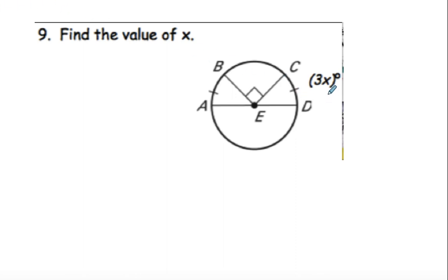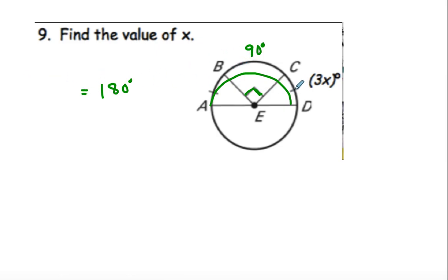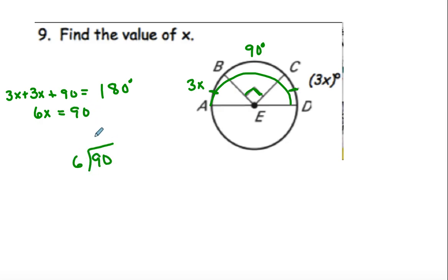Find the value of X. If this little piece is 90 degrees, then this is also going to be 90 degrees, and the entire side over here is 180. Since this is 3X and — notice the tick mark — this is also 3X, we have 3X plus 3X plus 90 equals 180. Adding: 6X plus 90 equals 180, so 6X equals 90. Dividing: X equals 15.